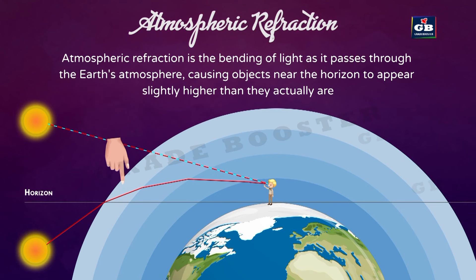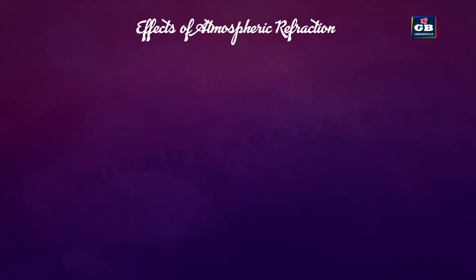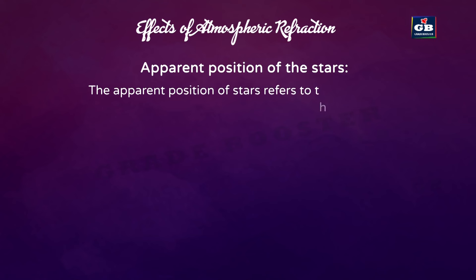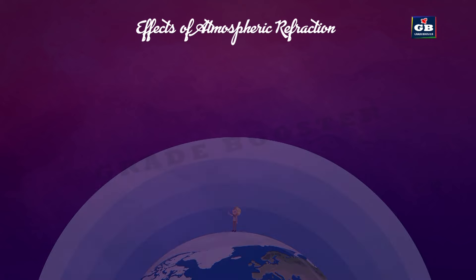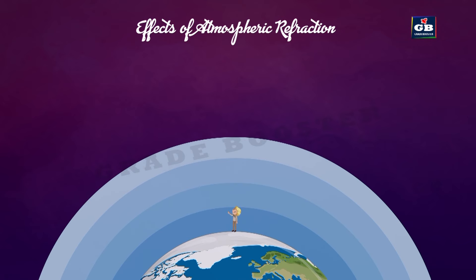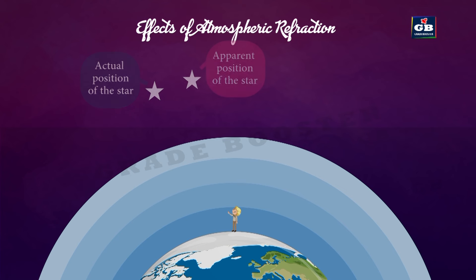Now let us see the effects of atmospheric refraction. Apparent position of the stars: the apparent position of the stars refers to their observed location in the night sky — we see stars at a different position from their actual position. Due to atmospheric refraction, a star appears to be at another position, called the apparent position.